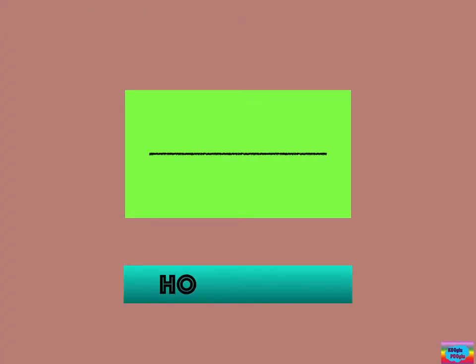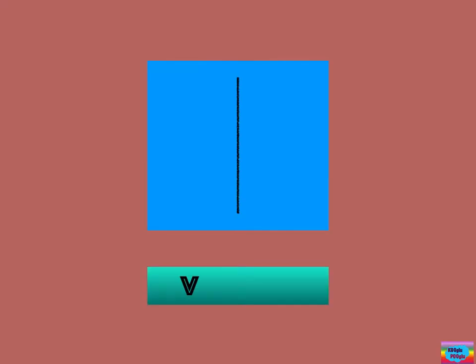This is called a horizontal line. We use it to make a square and a rectangle. This is called a vertical line. We use it to make all of the sides of a square and a rectangle.